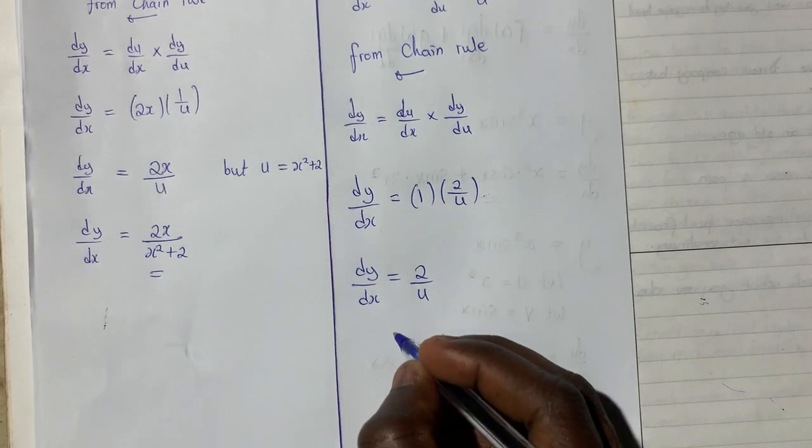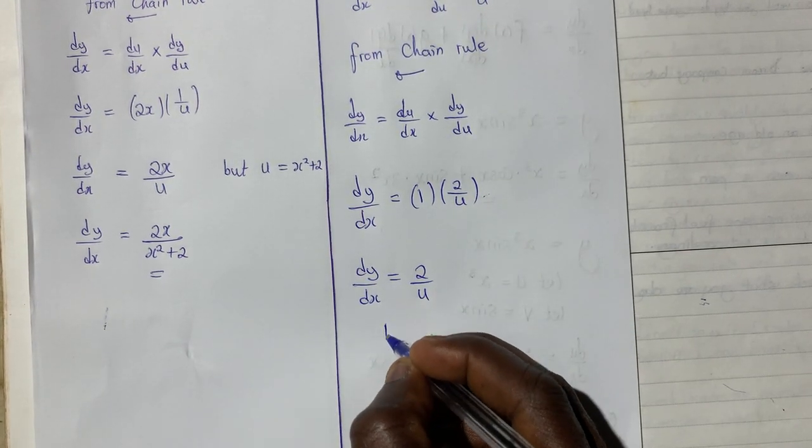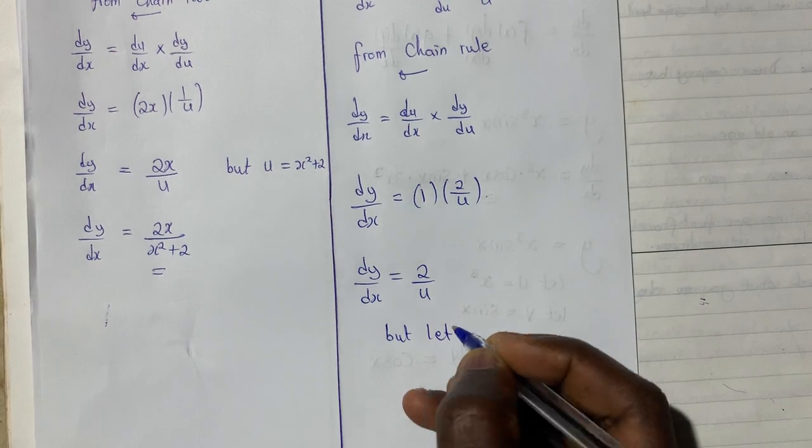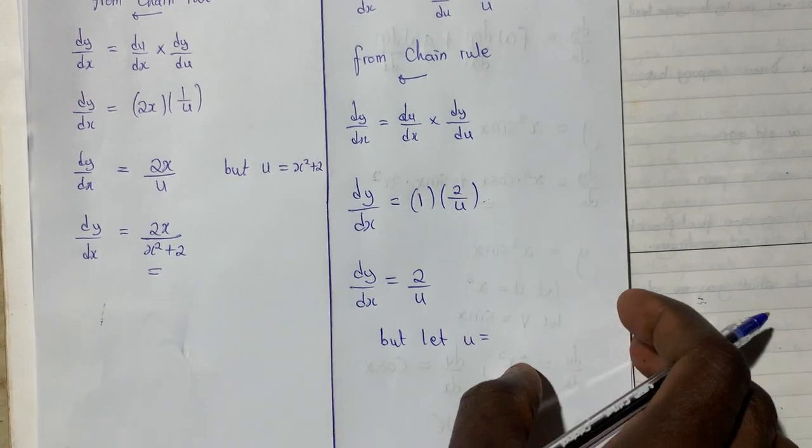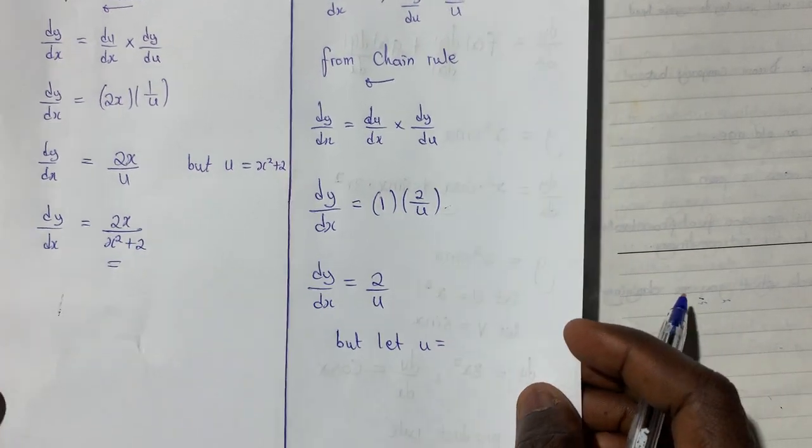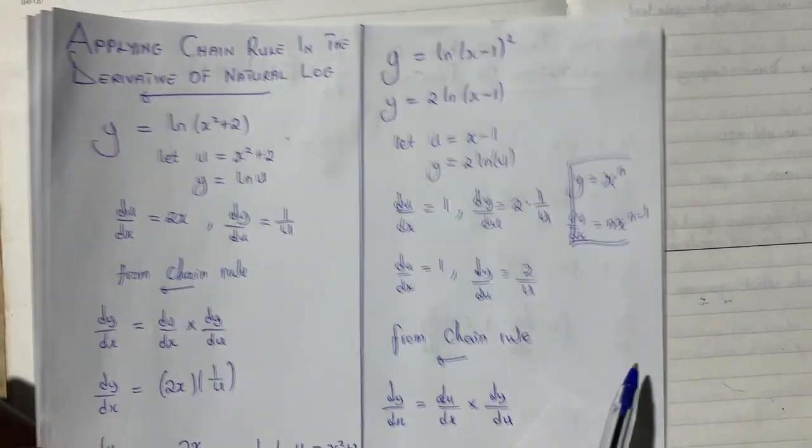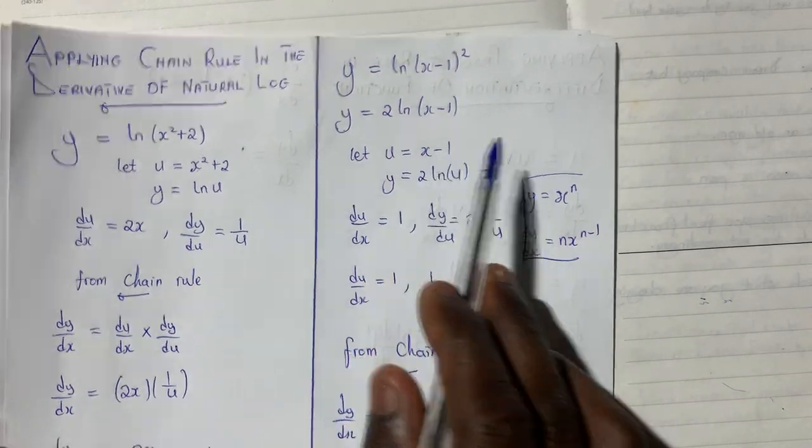But we shouldn't forget that in the beginning we said, let u be equal to, my u was equal to, in the beginning u was equal to x minus 1.